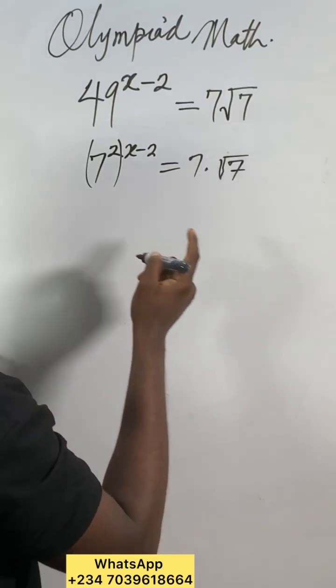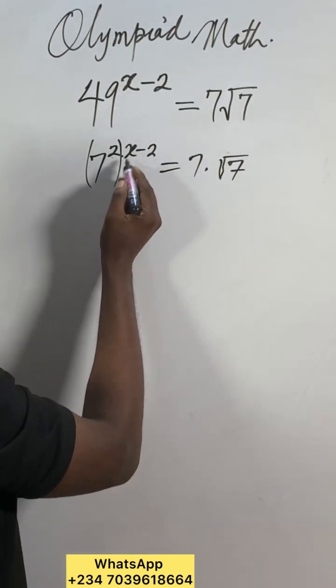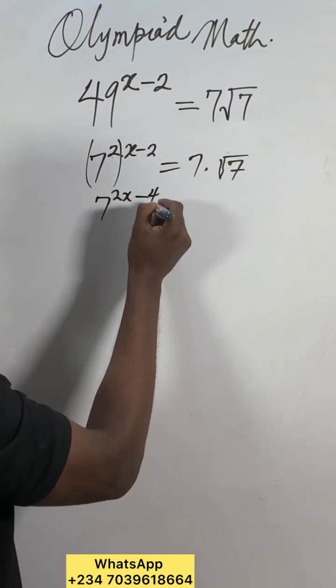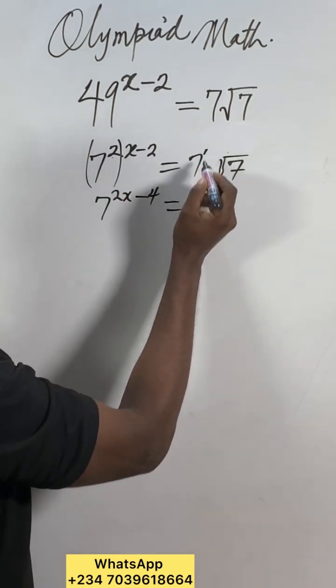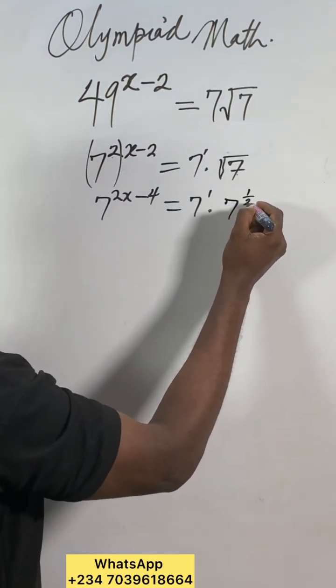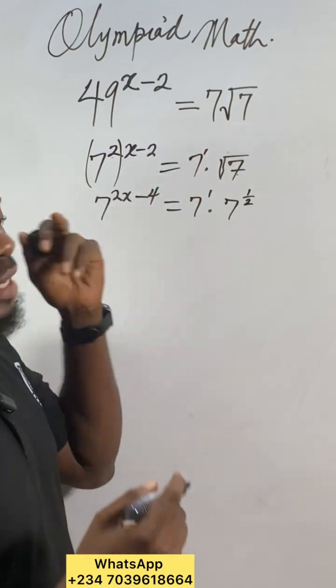We can go to the next one. So we can get 2 times x, which will be 2x, minus 2 times 2 is 4, equal to 7 to the power of 1 times 7 to the power of 1 over 2. 7 to the power of 1 is just 7.